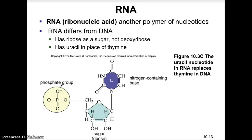RNA, ribonucleic acid, is another polymer of nucleotides. RNA differs from DNA because it uses ribose instead of deoxyribose as its 5-carbon sugar, and it has uracil in place of thymine. RNA is also single-stranded, whereas DNA is a double-stranded helix. There are 3 different types of RNA that will be discussed in molecular biology.